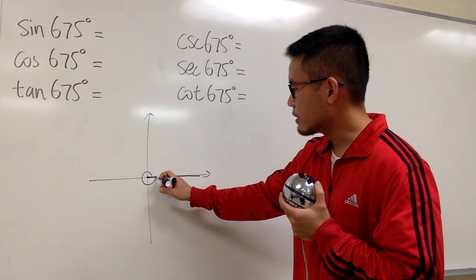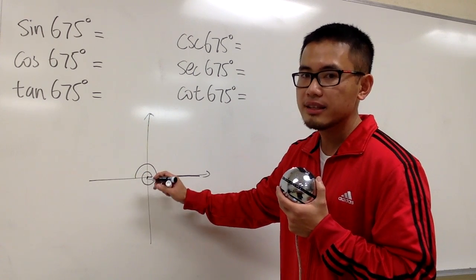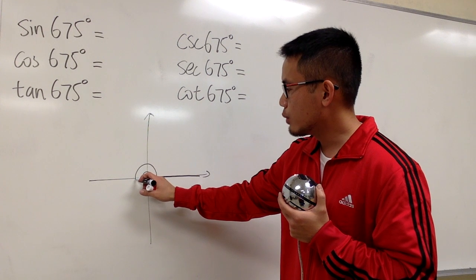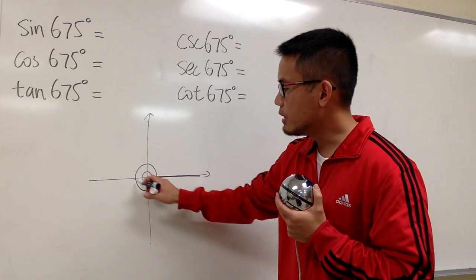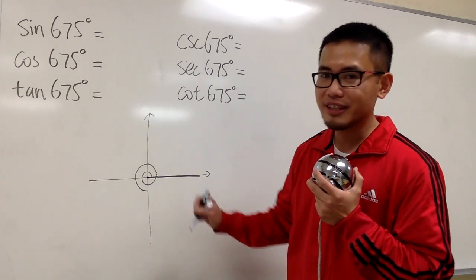Okay, so I'm going to go from here to here. 360 plus 180, this much right here, will be 540. Still not enough. And then I will go another 90 degrees from here to here. 540 plus 90 is 630. We're almost there.